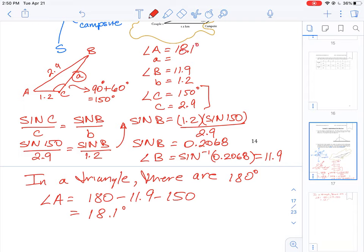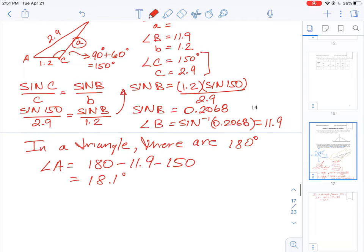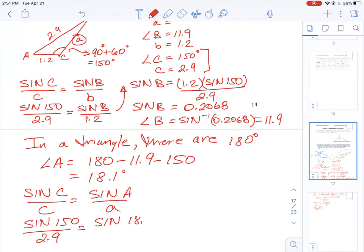Now angle A, or sorry, side A is the missing length. But again, we have a complete cosine or a complete sine pair. In fact, now we actually have two. We have a pair of angle B and side B, and angle C and side C. So we could use any one of those to calculate missing side A. So I can just go back to my original equation: sine C over C is equal to, sine not B this time, but sine A over A. So to do that, we'll fill this in again. So this is sine of 150 over 2.9, and then sine A is equal to 18.1 degrees all over little a. That's what we need to find.